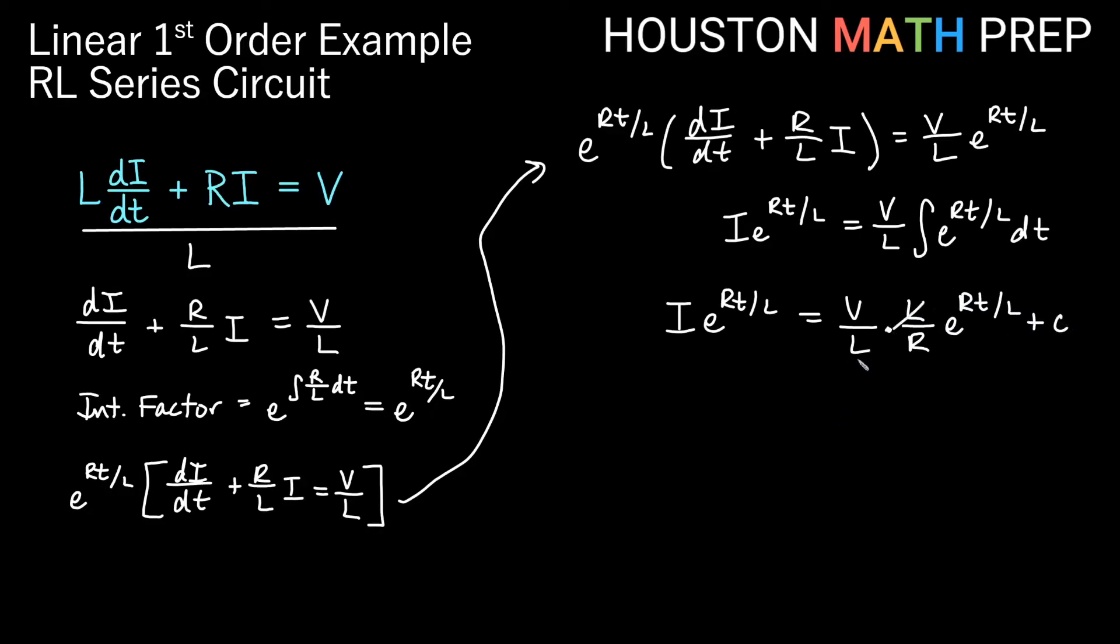You can see that the L's will reduce to 1 here, right? So we'll actually get I e to the RT over L is equal to V over R plus C, and I'm dividing by this exponential, so that's actually going to make this e to the negative RT over L. This is our general solution.